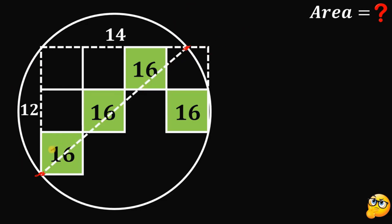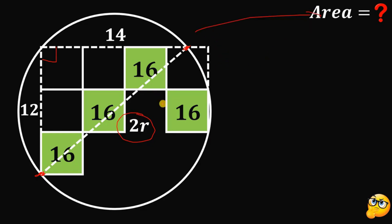This hypotenuse must be the diameter of the circle because this is a right triangle inscribed in the circle. Since it is a diameter, its length must be equal to twice the radius, so this is 2r. We can now solve for the radius and finally find the area of the circle using the Pythagorean theorem.